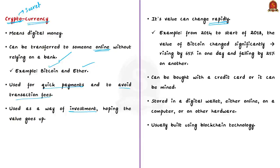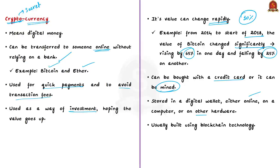This means cryptocurrency's value is highly dynamic. One can buy cryptocurrency with a credit card or, in some cases, through a process called mining. Cryptocurrency is stored in a digital wallet, either online, on a computer, or on other hardware. The important point to remember is that cryptocurrencies are usually built using blockchain technology. Blockchain is a decentralized database stored across a network of computers where all transactions are public and no single user has permission to alter other people's accounts. Participants can confirm transactions without the need for a central clearing authority.